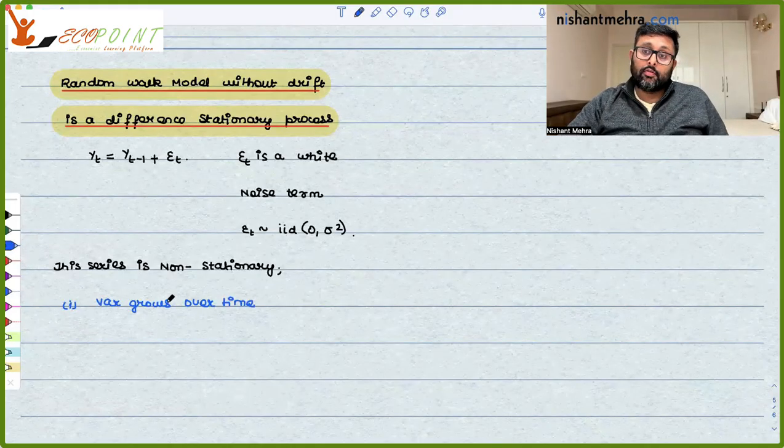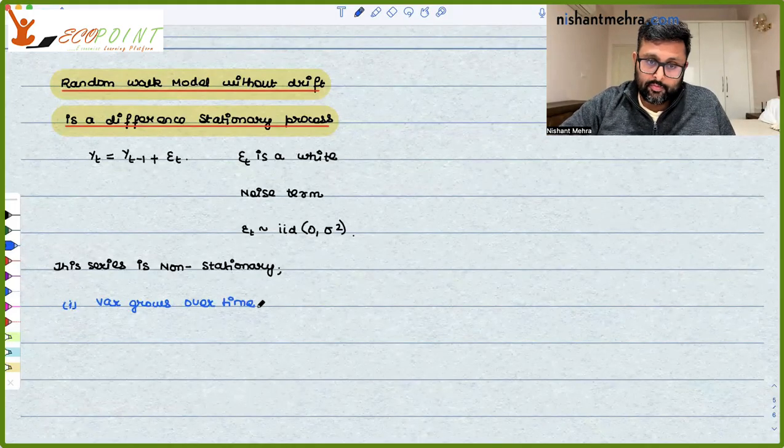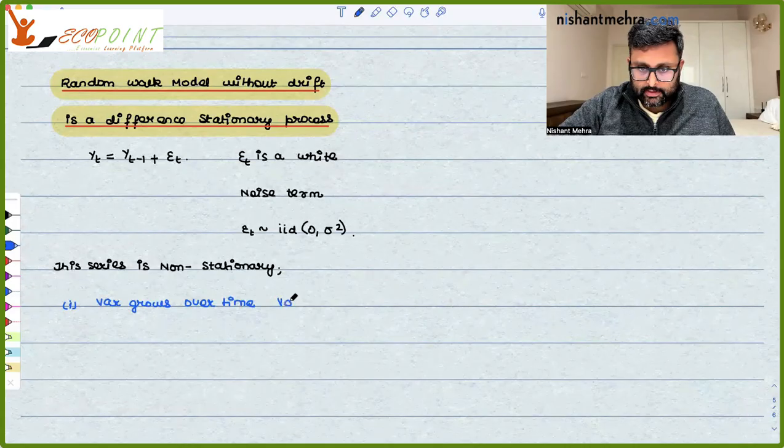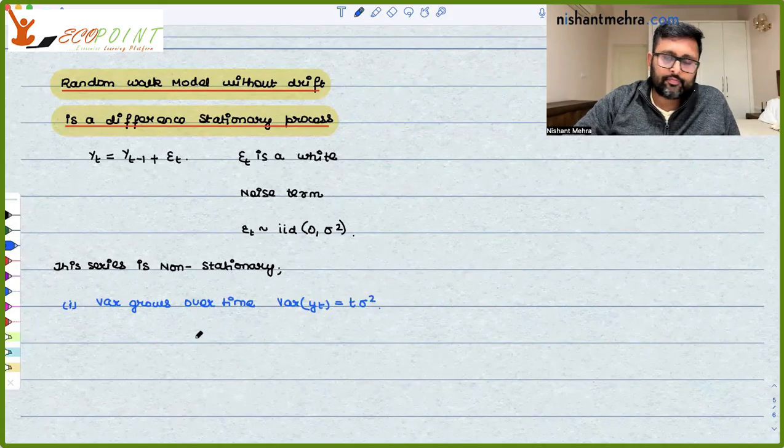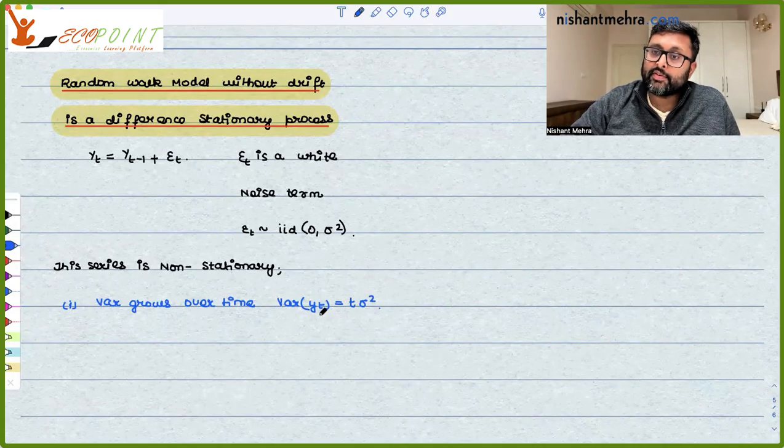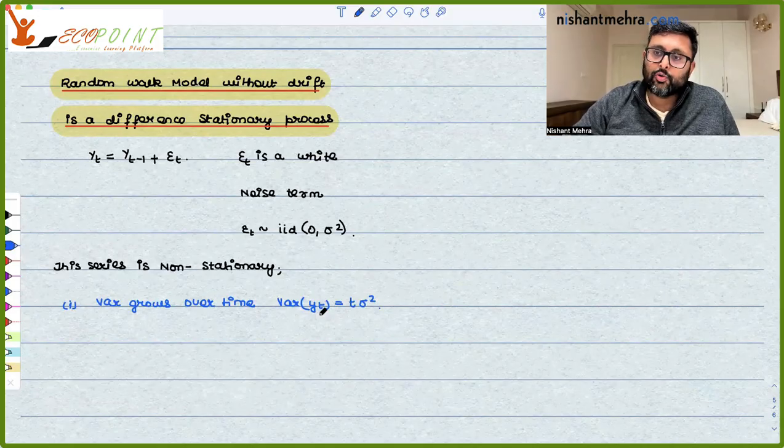Mean constant है, lekin joh variance है वो grow कर रहा है. We have already done this in the last classes where we showed that variance of yt is t sigma square. So as time increases, variance is going to increase.